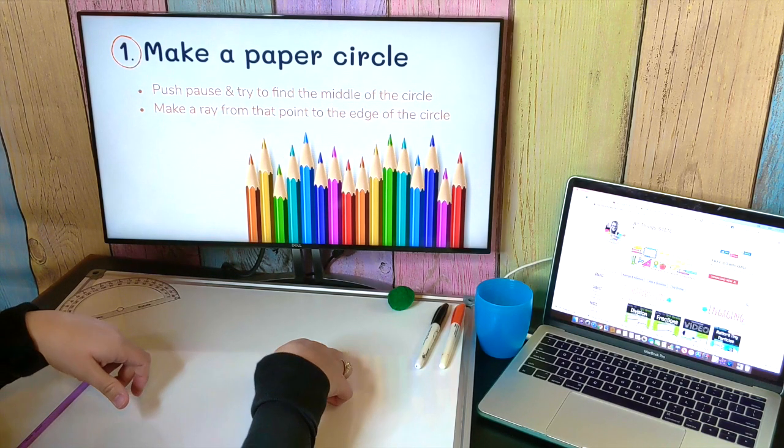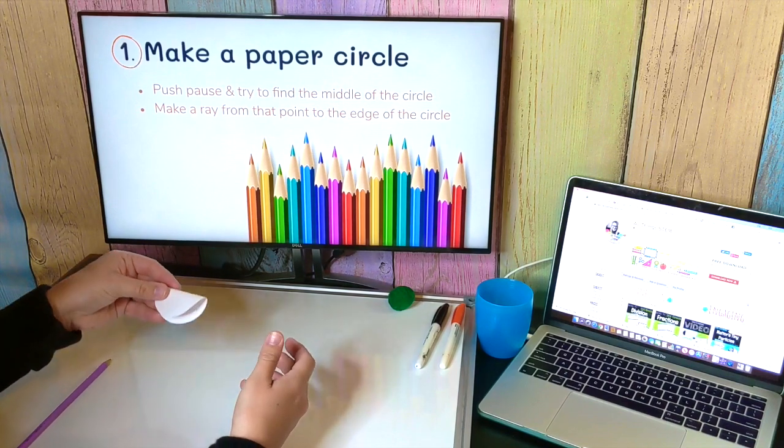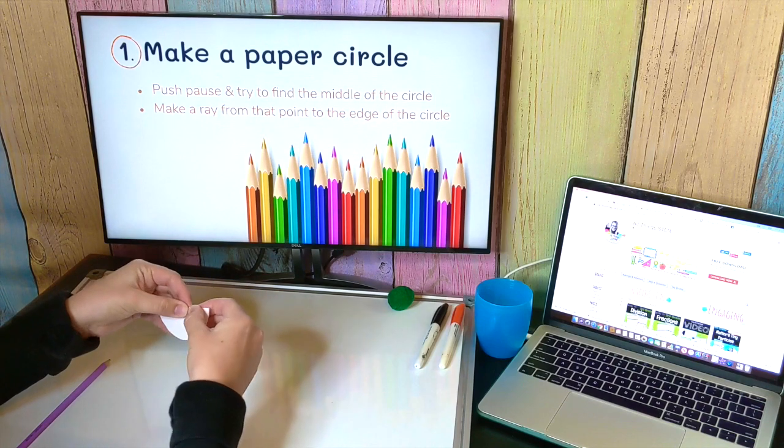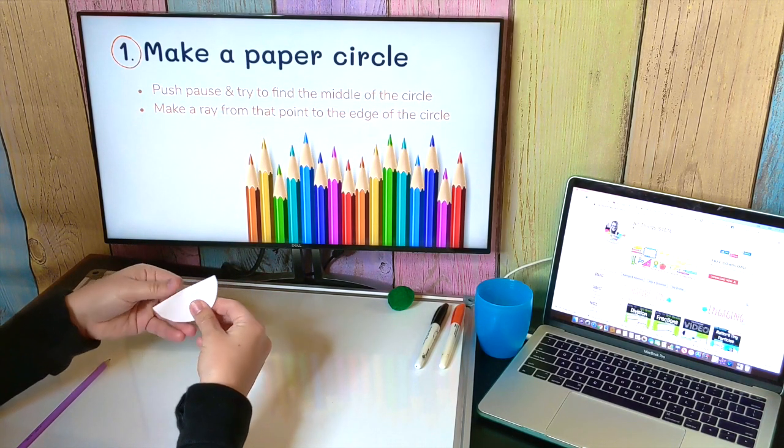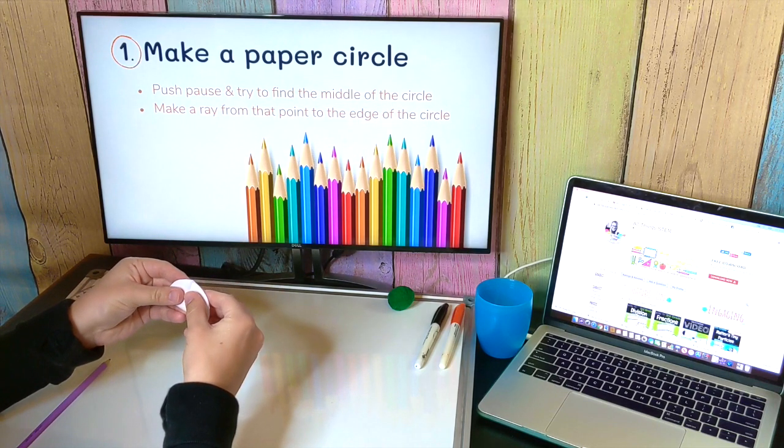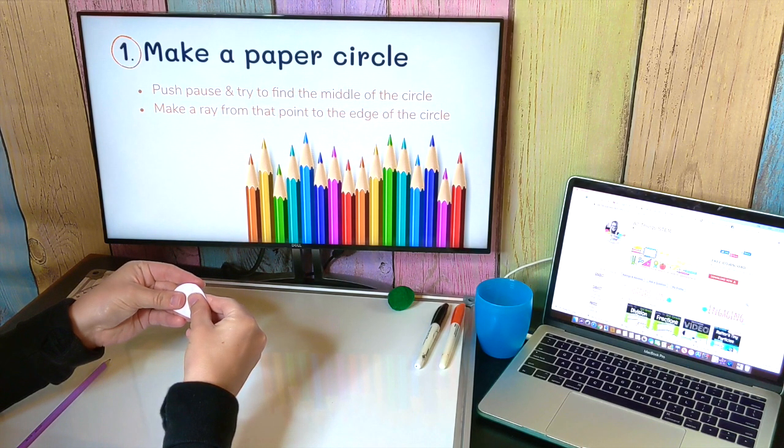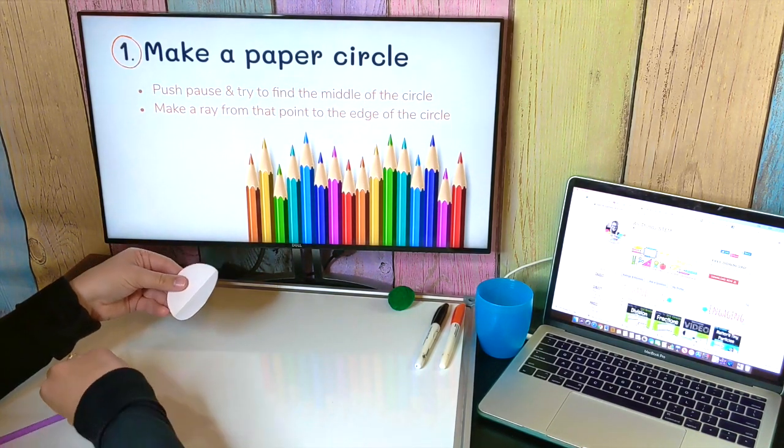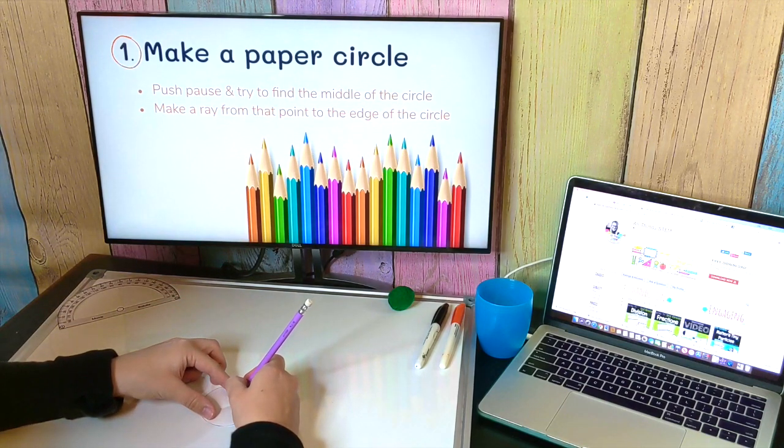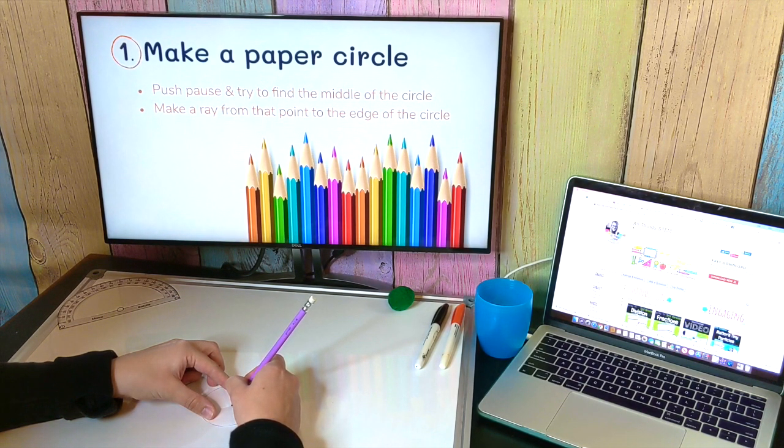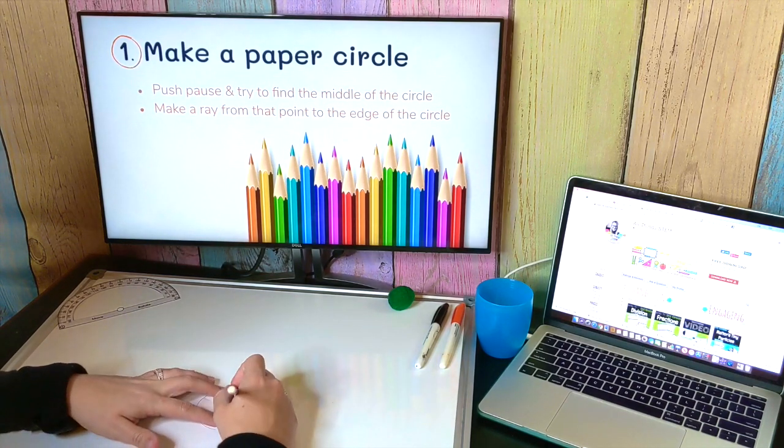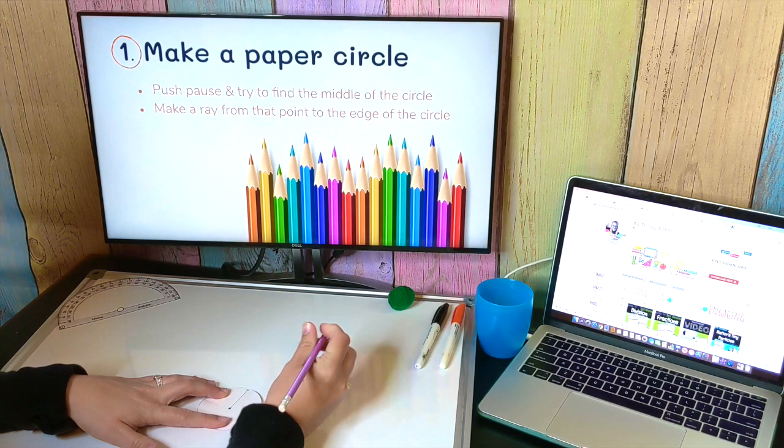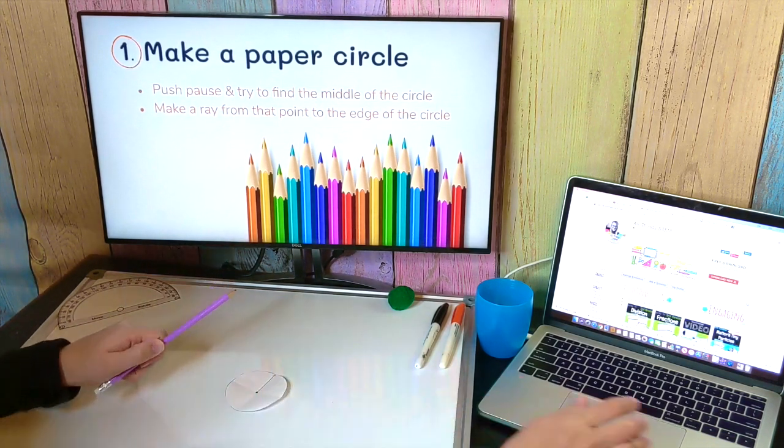Okay, so you may have chosen a different strategy, but what I would do is in order to find the middle, I would fold my circle in half two different ways, and where those two halves meet up is going to be the center. So I'm going to mark my point right there in the middle. So then you were supposed to draw a ray from that point to the edge of your circle. That's about what mine looks like.